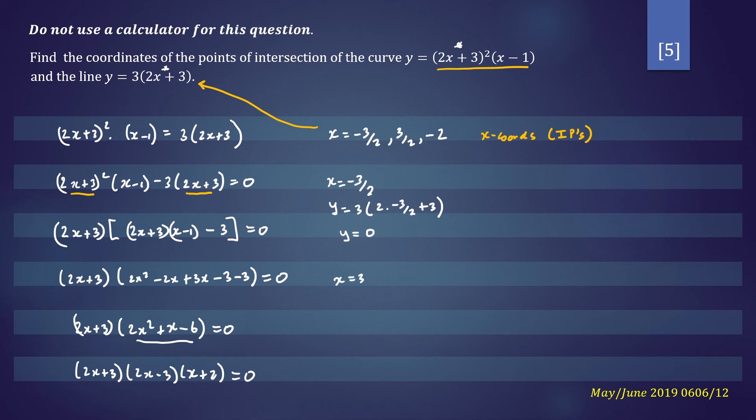If x equals 3 on 2, y will be equal to 3 times 2 times 3 on 2 plus 3. So y will be equal to 18.